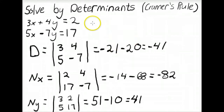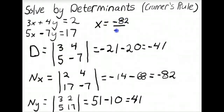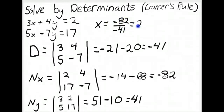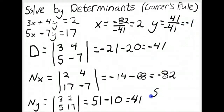Solving for X and Y: X equals the numerator of X over the denominator, which is negative 82 over negative 41, equaling positive 2. Y equals the numerator of Y over the denominator, which is positive 41 over negative 41, equaling negative 1. So the solution set is the ordered pair (2, negative 1).